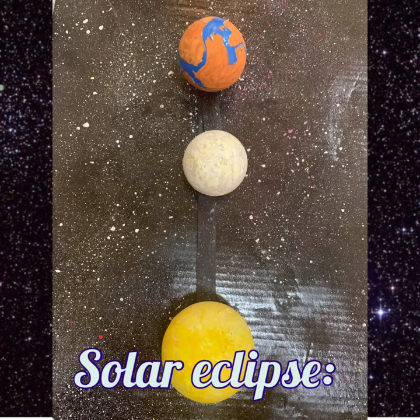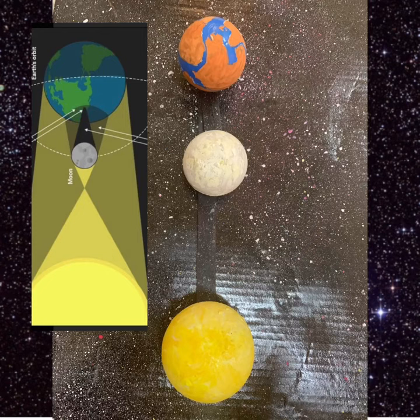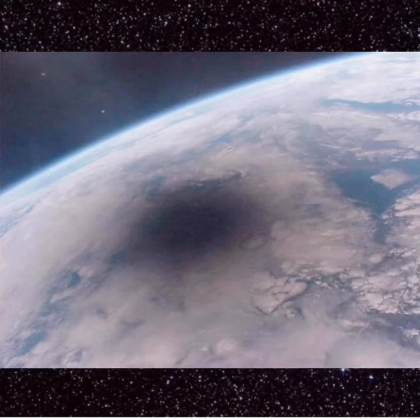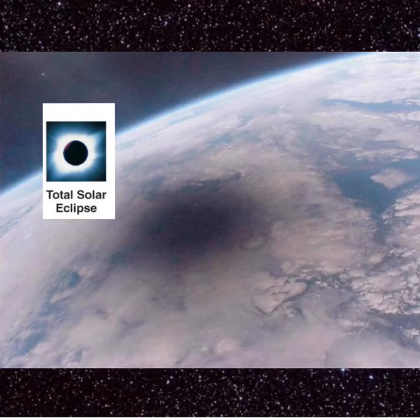Solar eclipse. It happens when the sun, moon, and earth are aligned and the moon is in the middle. The solar eclipse occurs at the birth of the new moon and it has three types: total, partial, and annular.